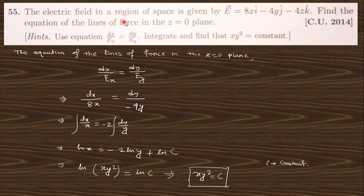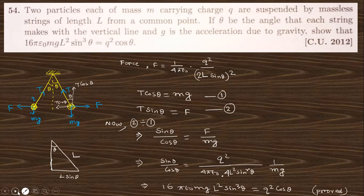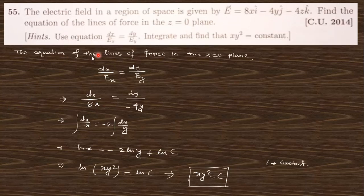The electric field in a region is given: E = 8xi - 4yj - 4zk. Find the equation of the lines of force in the z = 0 plane. The equation of lines of force is dx/E_x = dy/E_y. Since z = 0, the z portion is neglected. E_x = 8x and E_y = -4y. Putting these values and integrating, you get the equation ln(xy²) = constant.